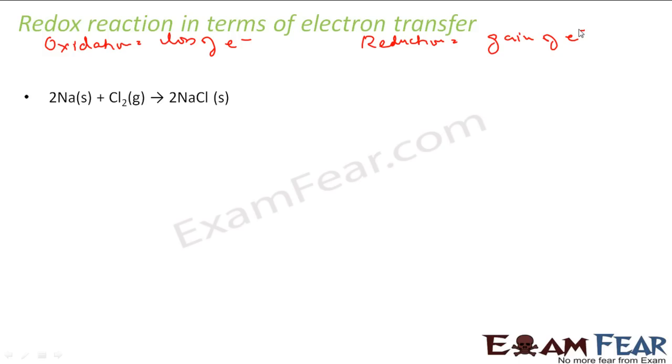Oxidized - loss of electron. Reduction - gain of electron. So let's take this example.